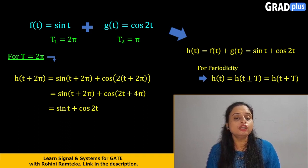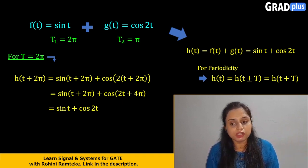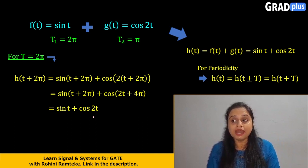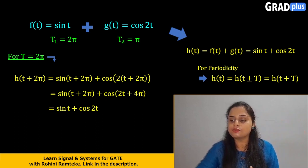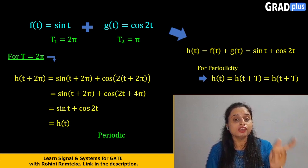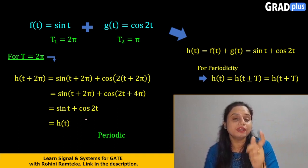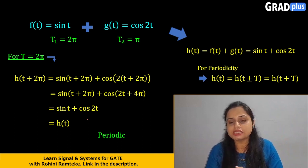Now, sin(2π + θ) = sin(θ), and cos(4π + θ) = cos(θ). Here the value of θ for the first term is t, and for the second term it is 2t. So the final answer: h(t + 2π) = sin(t) + cos(2t). But this is nothing but our original output h(t). That means the condition h(t) = h(t + T) is satisfied, so the signal is periodic.